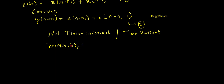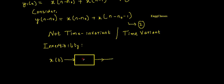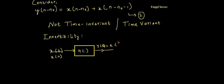Moving on further, the second task is to test for invertibility. Is this system invertible or not? To test that, let me consider the input x(n) being given to a system with operator H to get the output y(n). I should note this is discrete time, not continuous time — so it is x(n) and y(n), not x(t) and y(t). y(n) is equal to x(n) plus x(n-1).